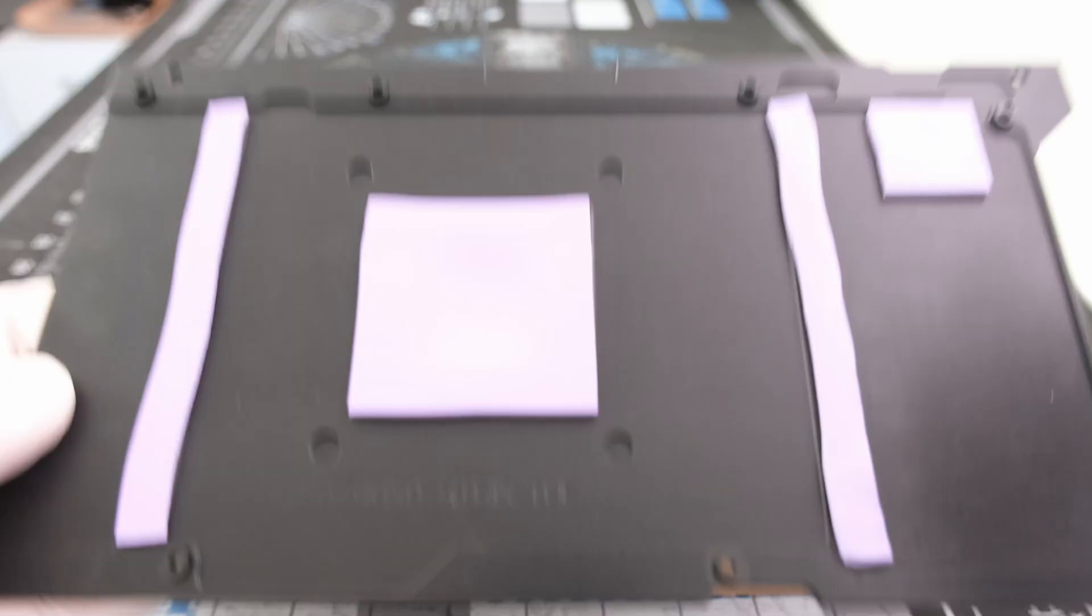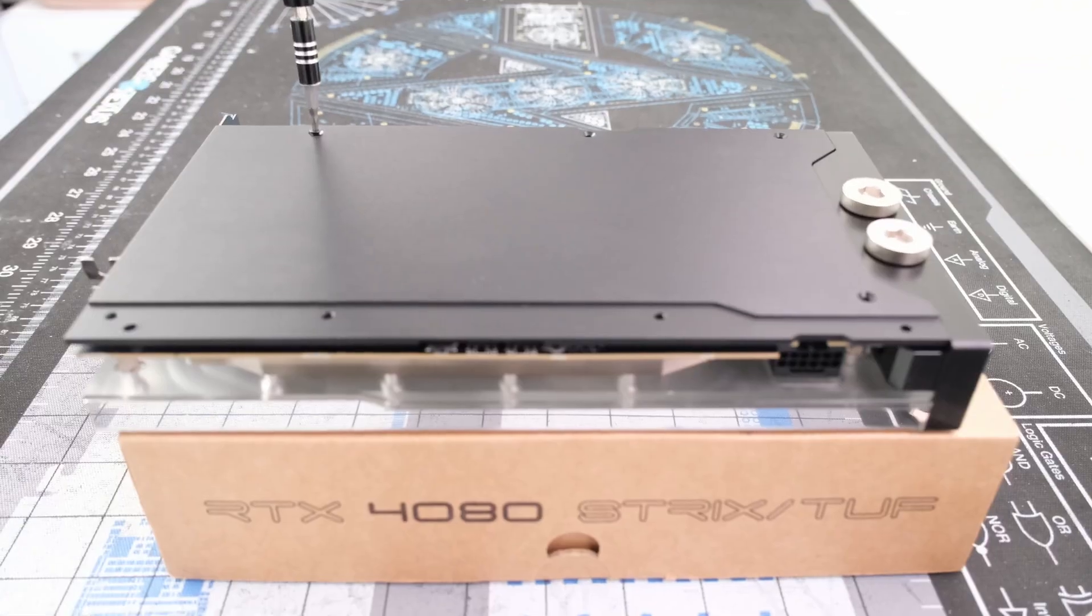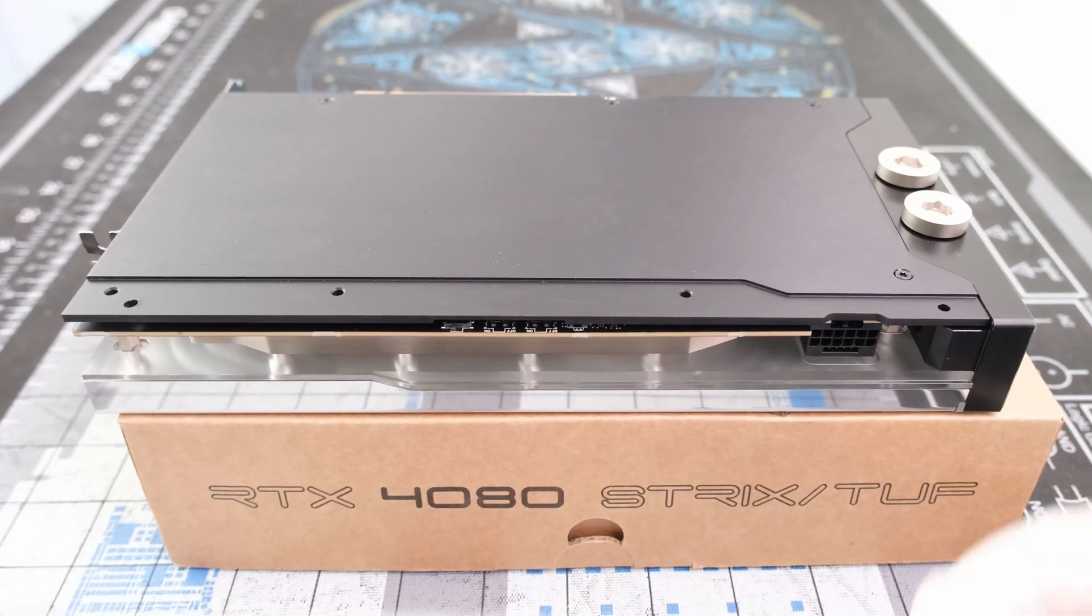After that, we can drop the aluminum back plate directly on top of the PCB, followed by four Torx screws for the back plate, and another three Torx screws for the branded cover.